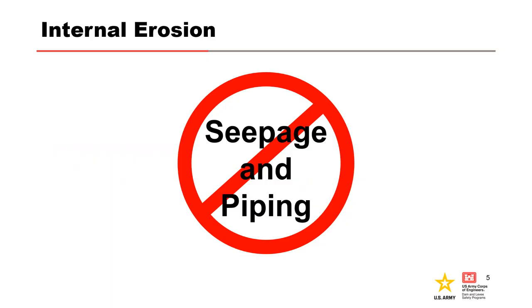Internal erosion has commonly been described as seepage and piping in the literature and by practitioners, but this poorly characterizes internal erosion. All dams and levees have some seepage as the impounded water seeks paths of least resistance through the embankment and foundation, and should be controlled to prevent erosion of the embankment or foundation or damage to concrete structures. Seepage becomes a concern if it is carrying material with it.